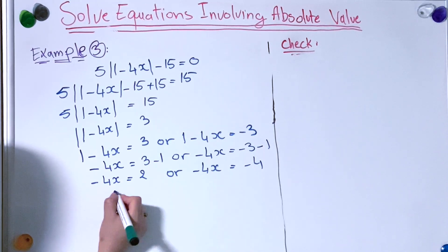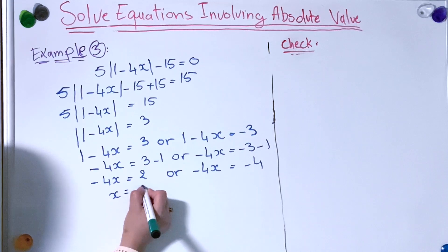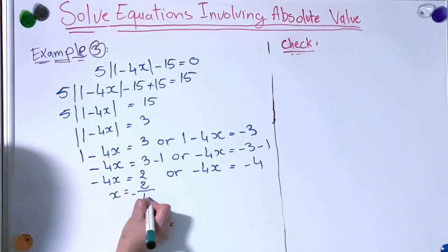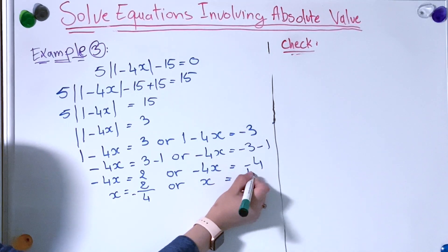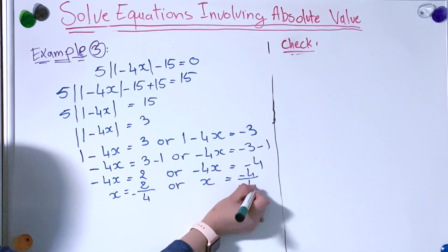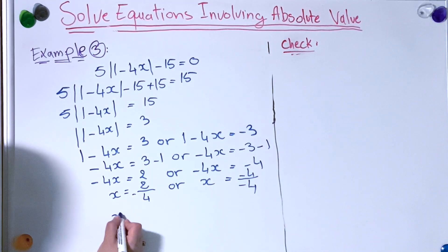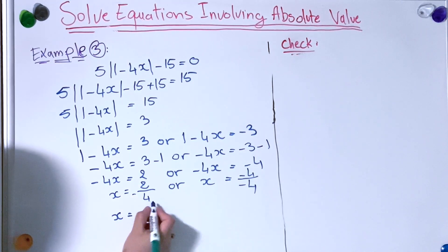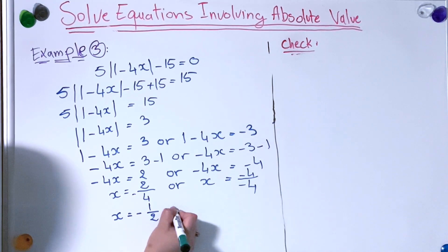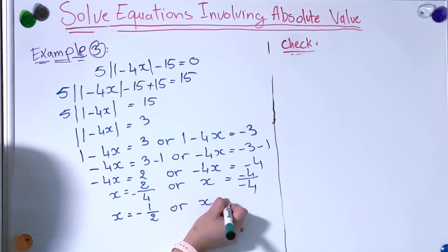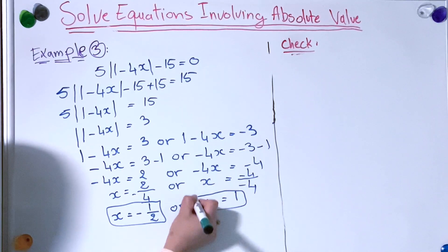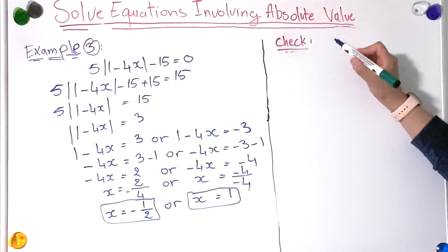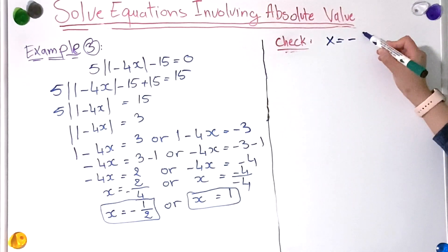Dividing both sides by minus 4: x equals 2 over minus 4, or x equals minus 4 over minus 4. Simplifying, x equals minus 1 over 2, or x equals 1. So now we have found the x solutions.